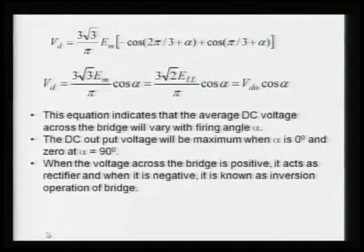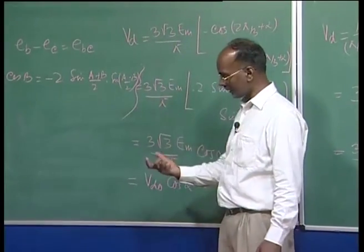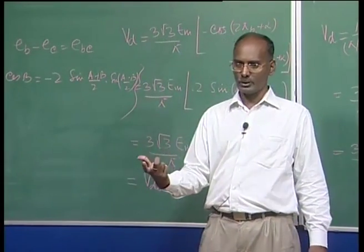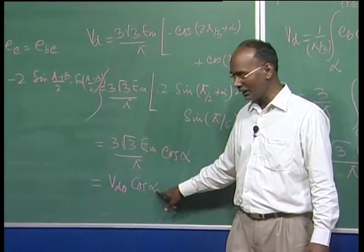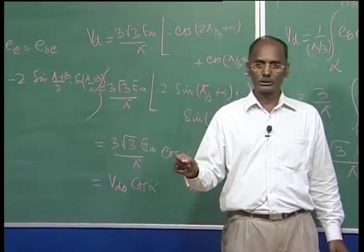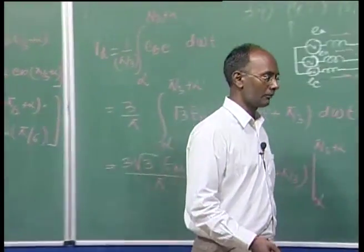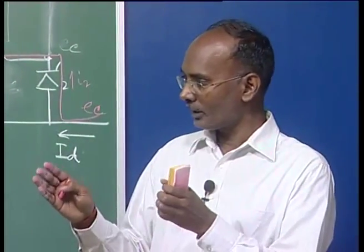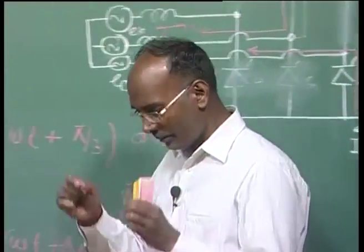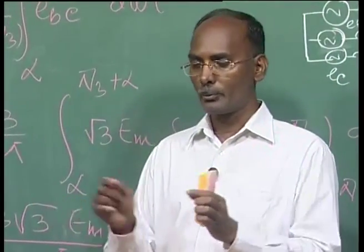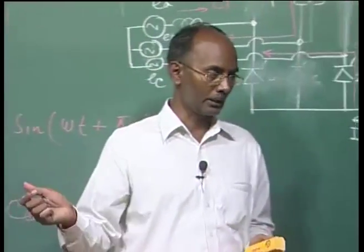When alpha is zero, we get the highest DC voltage, as in a standard rectifier. Delaying alpha to 90 degrees makes the output voltage zero. Beyond 90 degrees the voltage becomes negative, meaning inverter operation. So from 0 to 90 degrees (ideal case, no overlap) the output voltage is positive or zero; beyond 90 degrees it becomes negative, corresponding to inverter operation.